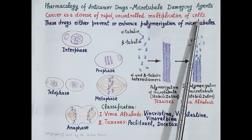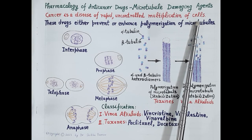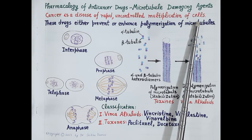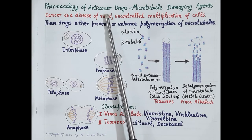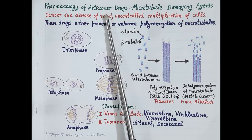Hello students. As we all know, cells divide to grow and repair tissues. Cell division is a highly regulated and controlled process, and the disease cancer arises due to the rapid, abnormal, uncontrolled, excessive multiplication of cells.